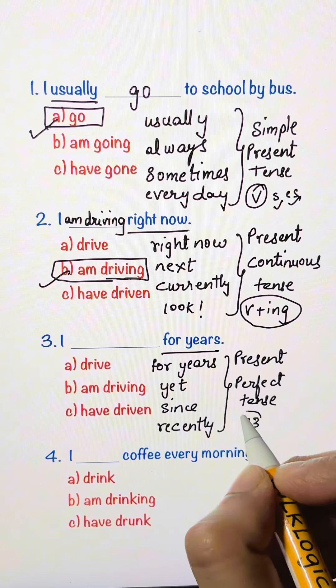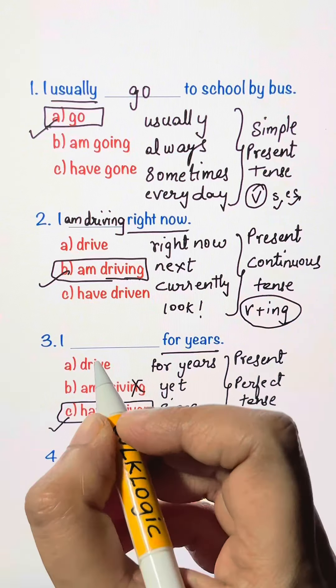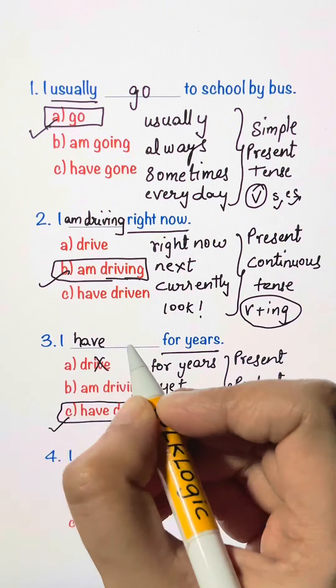That is the verb three. So here the verb three is driven. Not driving with ing, not drive. I have driven for years.